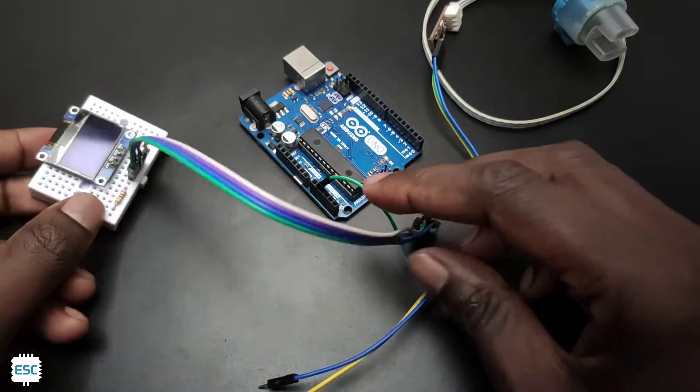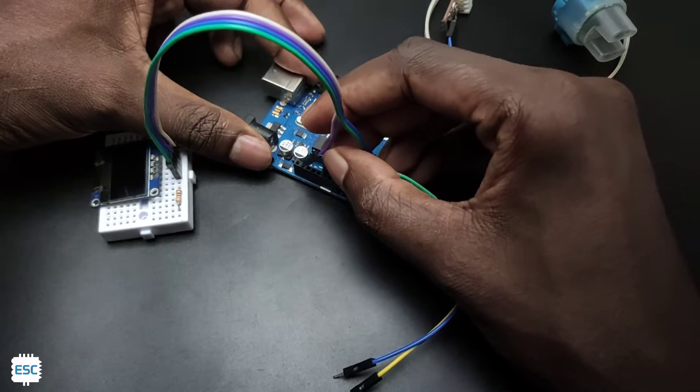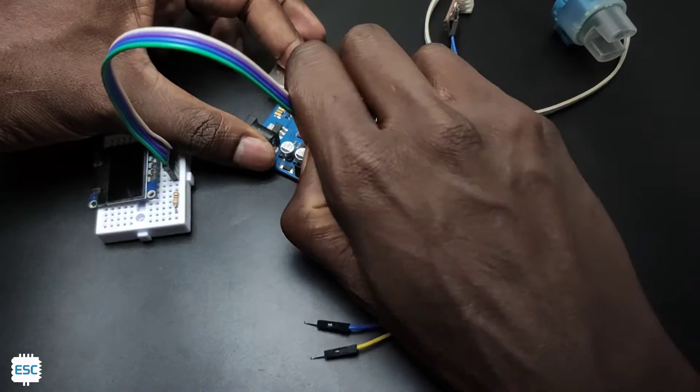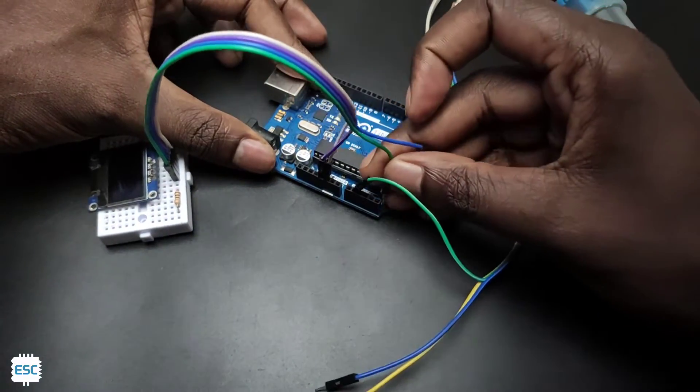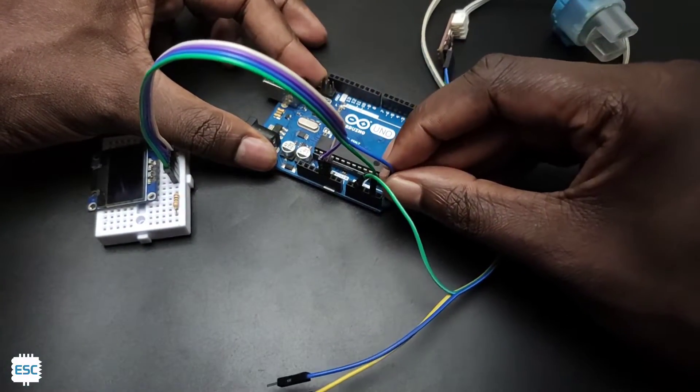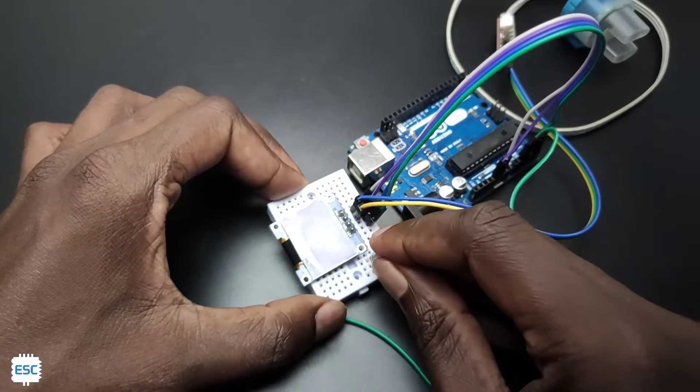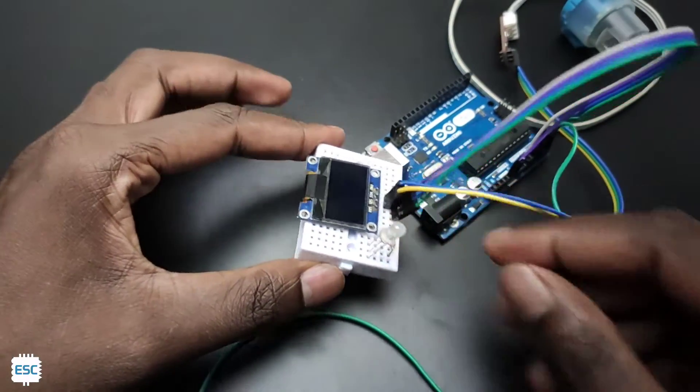Now let's build the turbidity meter. So I connected the OLED display to the Arduino. Ground to ground. VCC to 5V. SDA to A4. And SCL to A5. Also I connected a RGB LED.